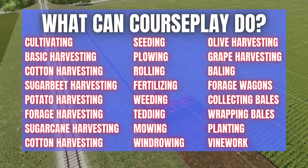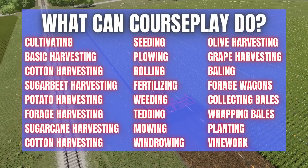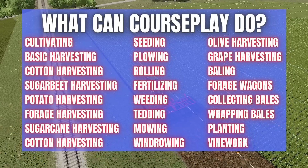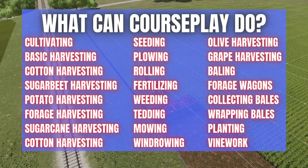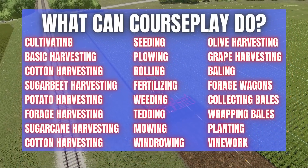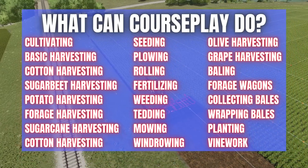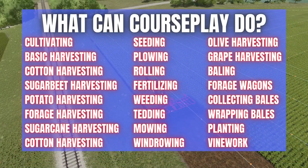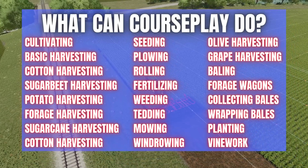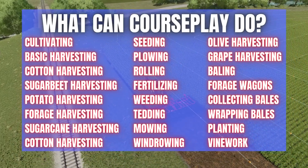Vine work is a new feature I should note. So we'll kind of test it out a little bit and see how it works. By vine work I mean you can do stuff with your grapes and olives including harvesting, mulching, that sort of thing. You can also do fertilizing such as manure spreading, slurry spreading, digestate spreading, solid fertilizer, and liquid fertilizer.